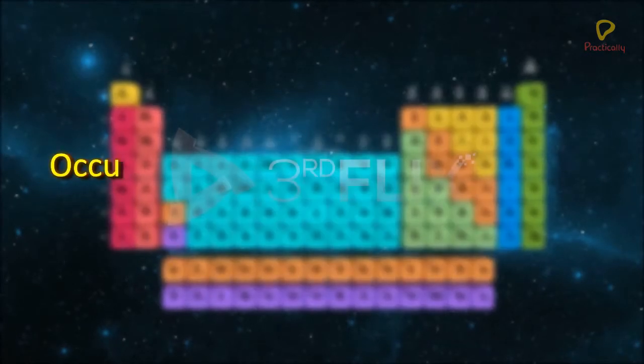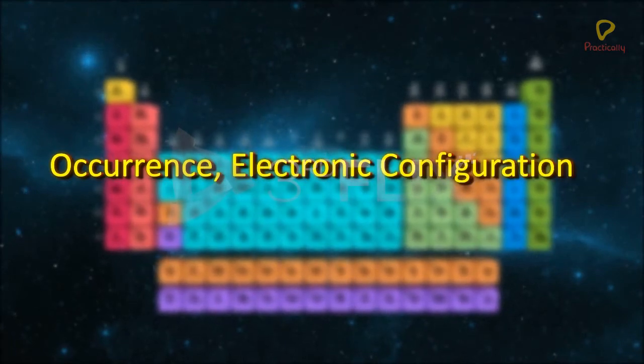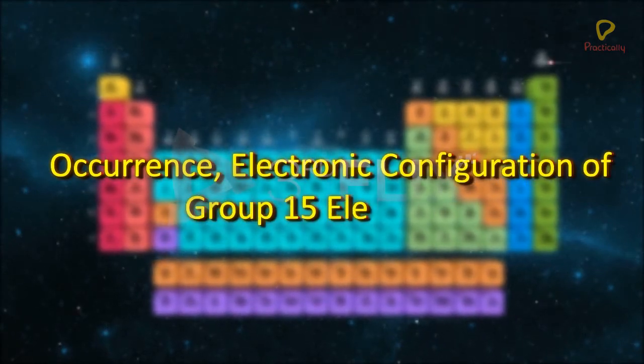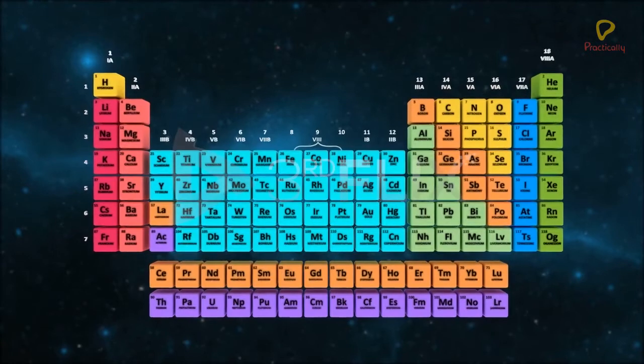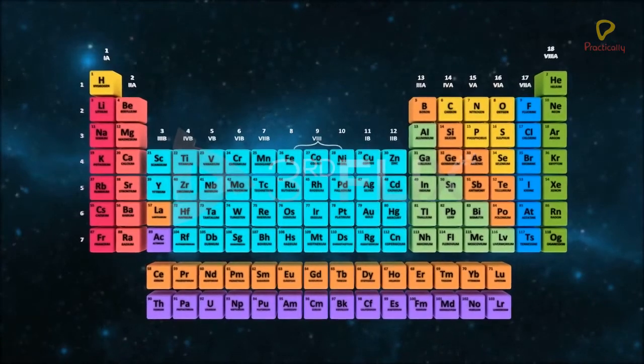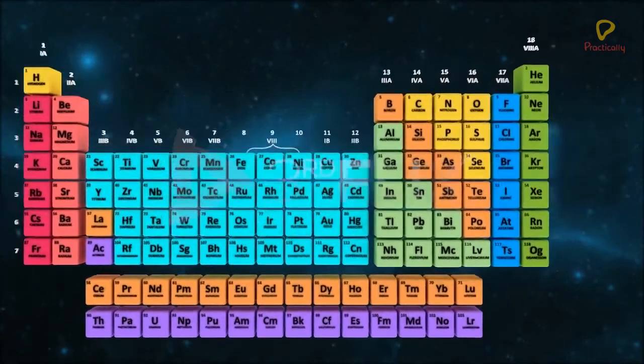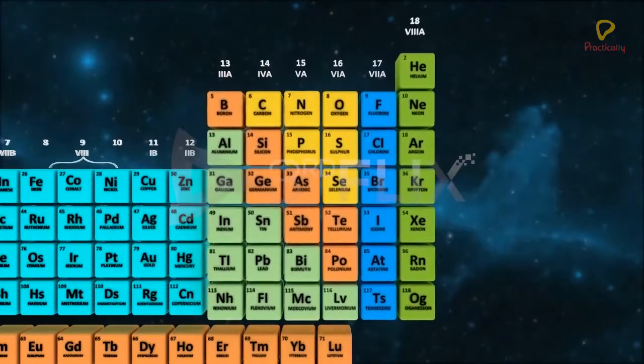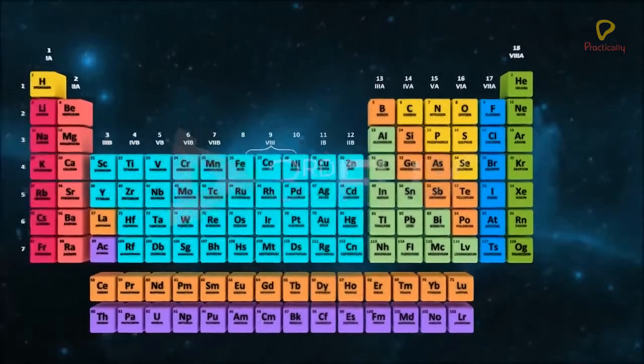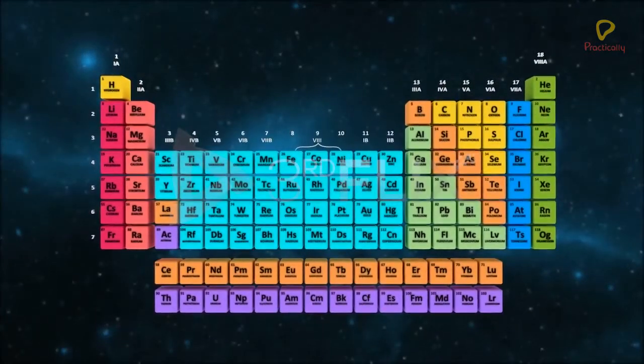Objective: To study the occurrence and electronic configuration of group 15 elements. Group 15 is a P-block group situated on the right side of the periodic table. This group includes elements like: